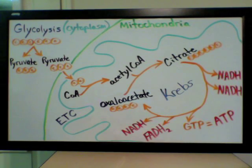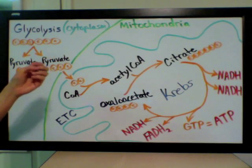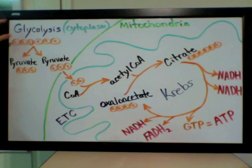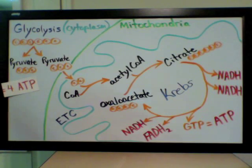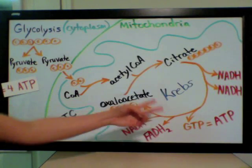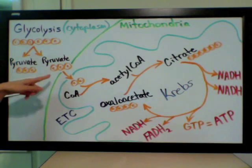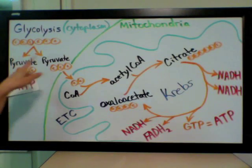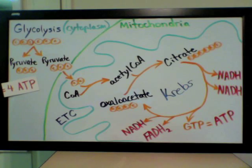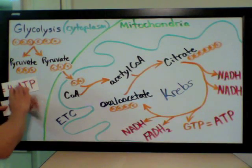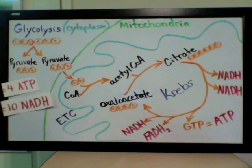Counting ATPs: glycolysis netted two ATPs — four were produced but two were used up, for a net of two. Adding the two ATPs from the Krebs cycle gives us four ATPs total so far from the first two stages. For NADHs: six from the Krebs cycle, plus one NADH per pyruvate oxidation gives two more, making eight. Two NADHs from glycolysis brings the total to ten NADHs, and we make just two FADH2s from the Krebs cycle.